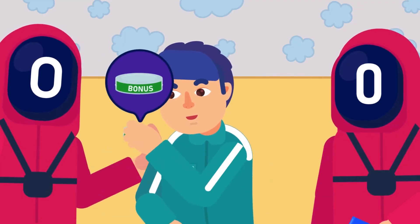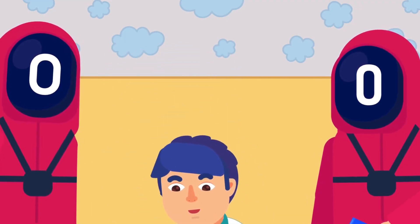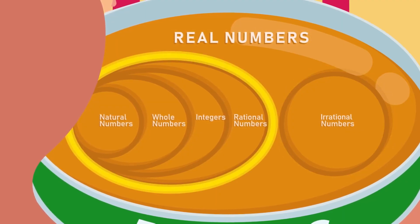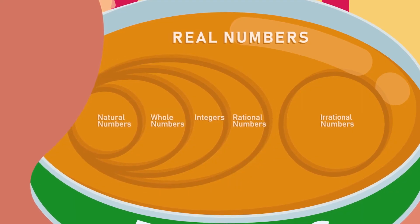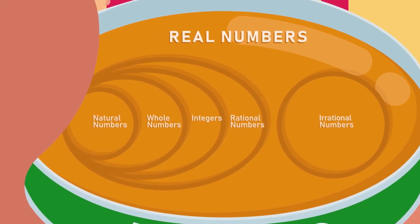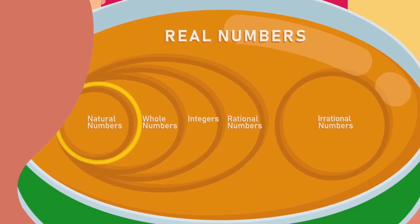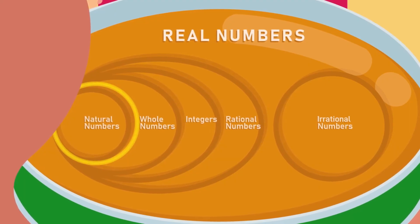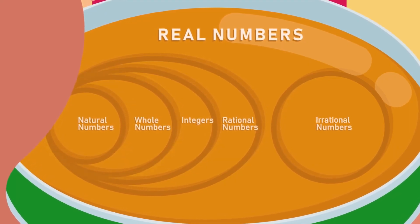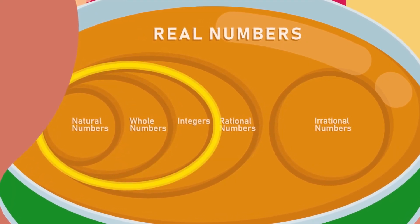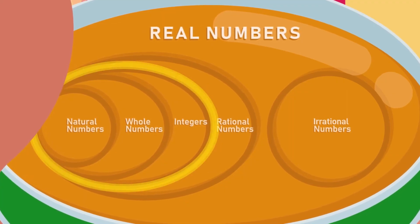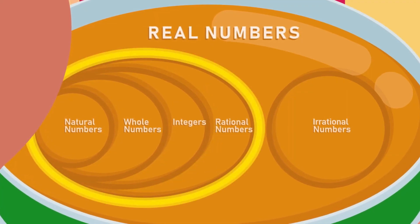By this Venn diagram, we can see that real numbers include irrational and rational numbers. Within rational numbers, the diagram shows that natural numbers are a subset of whole numbers. Whole numbers are a part of integers. Integers are a part of the subset of rational numbers.